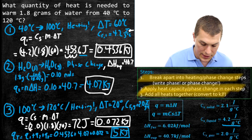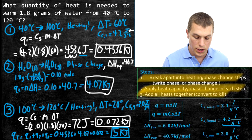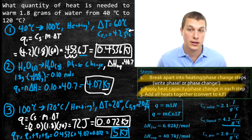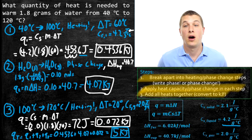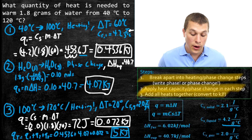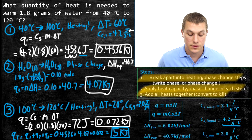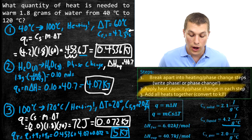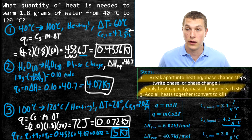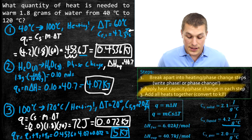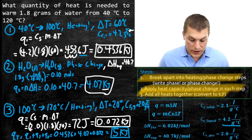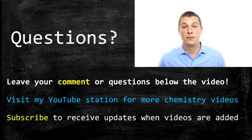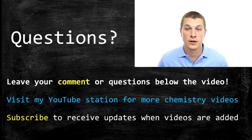These problems are relatively lengthy — you combine heat capacity calculations with phase change calculations. If you had trouble following any steps, check out the videos on phase changes and enthalpy and on heat capacity. What we've found is that heating 1.8 grams of water from 40 degrees Celsius to 120 degrees Celsius takes 5 kilojoules of energy. Most of the energy goes into the phase change step — 4 kilojoules just to boil the water. If you have any questions about this episode of Real Chemistry, please ask them below, and subscribe for future videos.